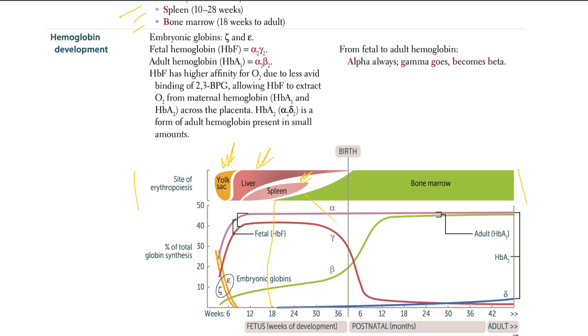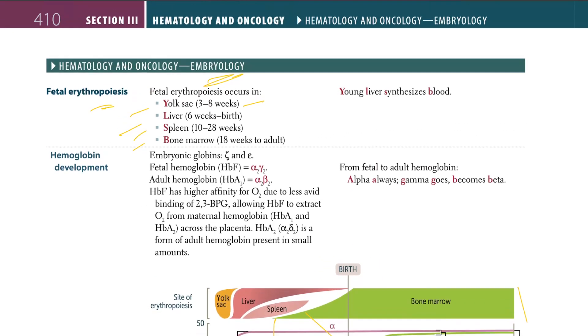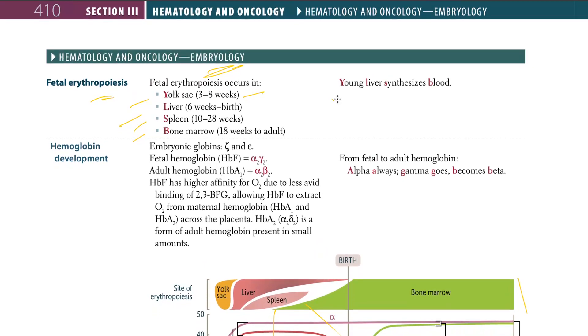And after birth, 100% is going to go from the bone marrow. So before the birth, we have the yolk sac, the liver, the spleen, and slowly start from the bone marrow. And right after birth, it's just bone marrow. And the mnemonic they have is the young liver synthesizes blood, which means yolk sac, liver, spleen, and bone marrow. So just know the names of the organs, yolk sac, liver, spleen, bone marrow.